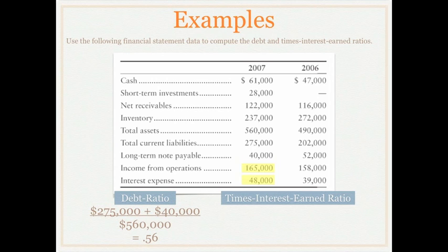We're going to take our income from operations of $165,000 and divide that by our interest expense of $48,000. That will give us a times interest earned ratio of 3.4 times. That means this company can cover their interest expense as it comes due with their income from operations 3.4 times. It's a fairly good times interest earned ratio as they can cover their interest on their loans as they come due.